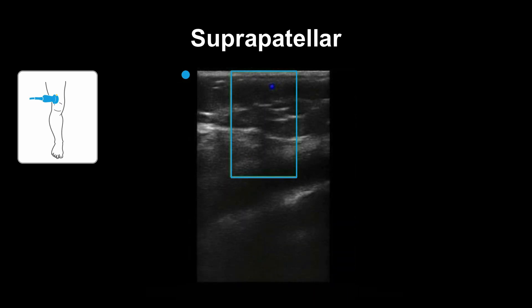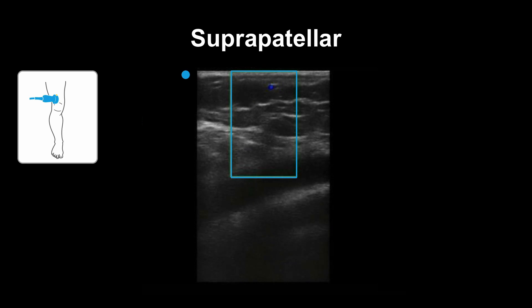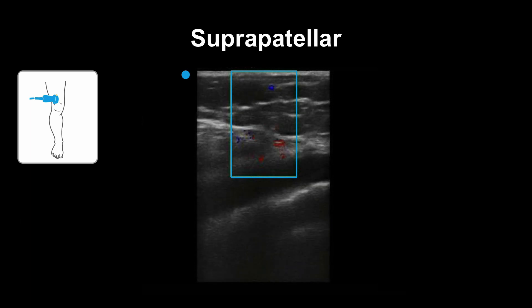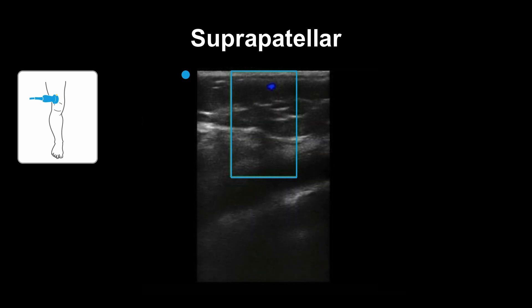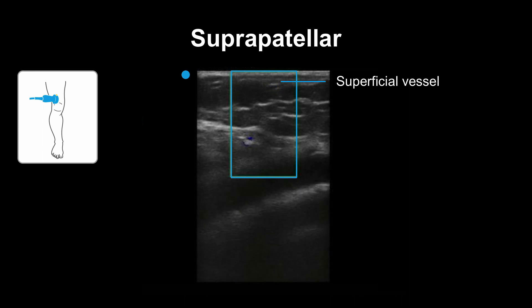Once you've found your pocket, another important consideration is to look for structures in the path of your needle. What do you see here? It's a superficial vessel.